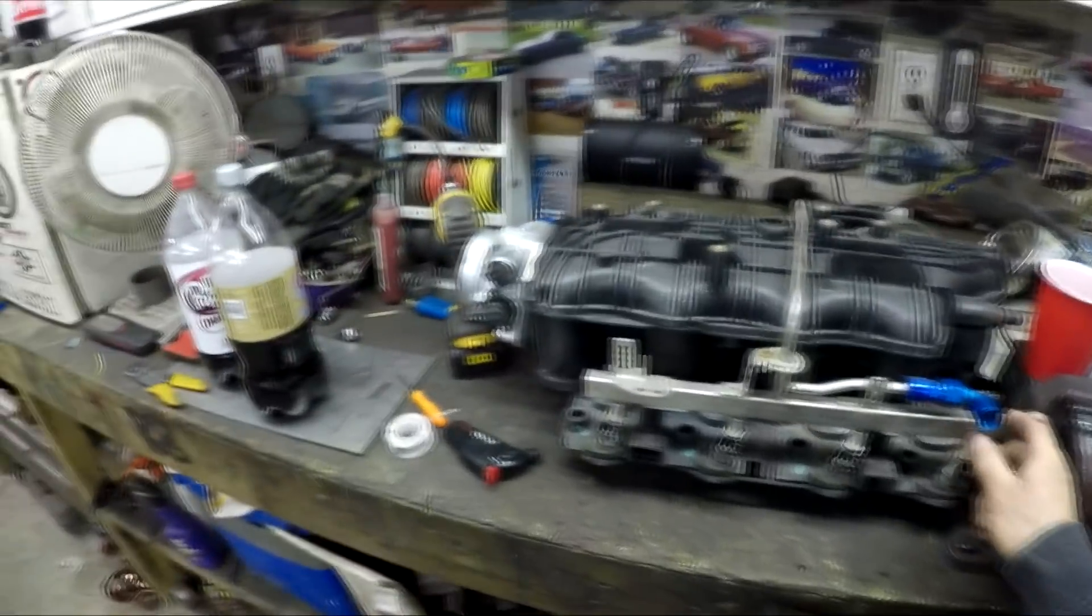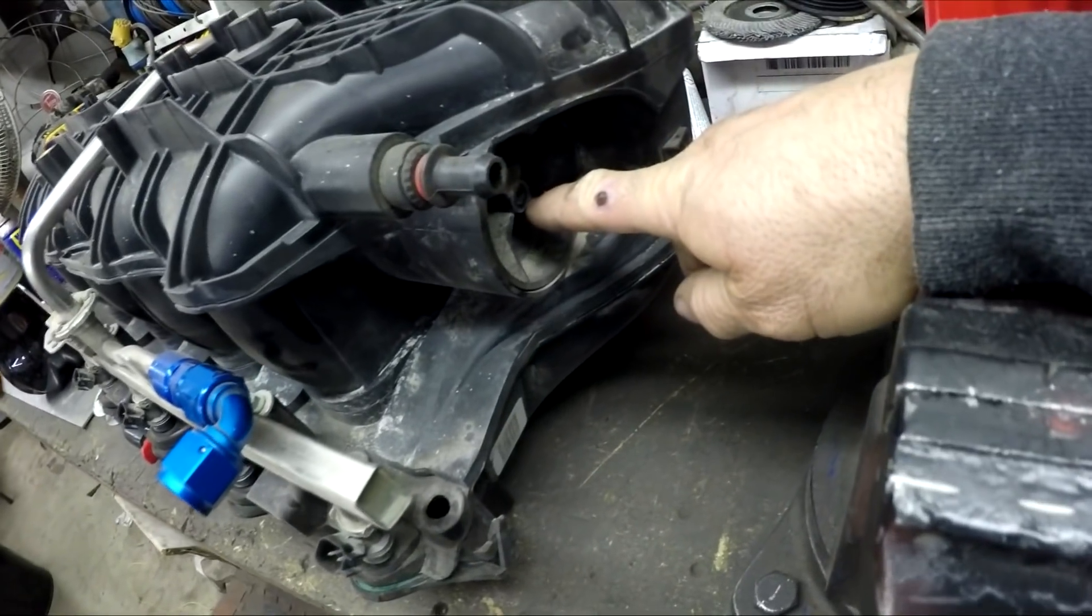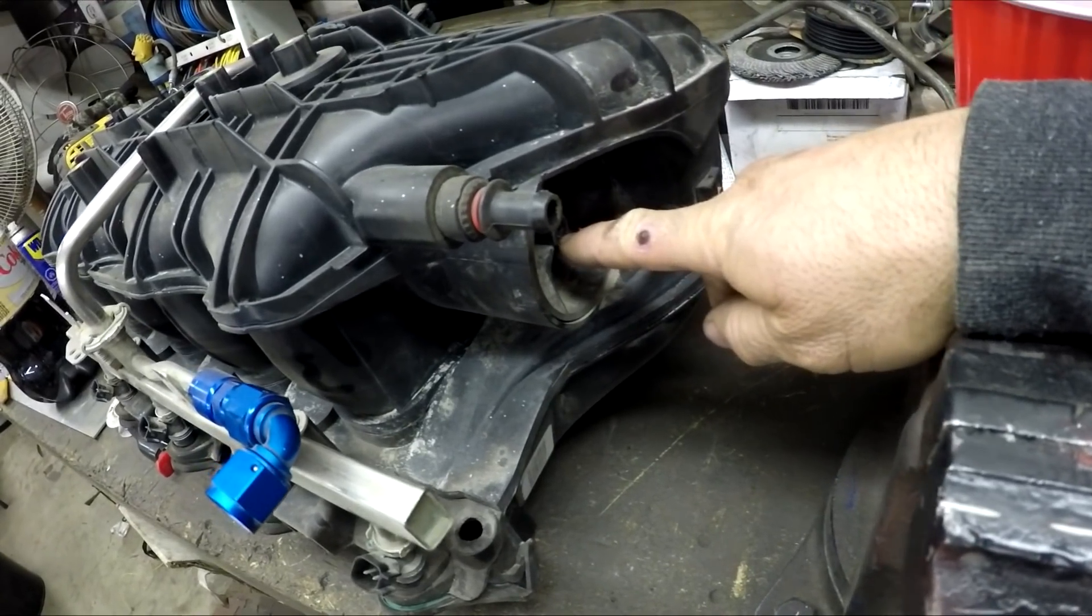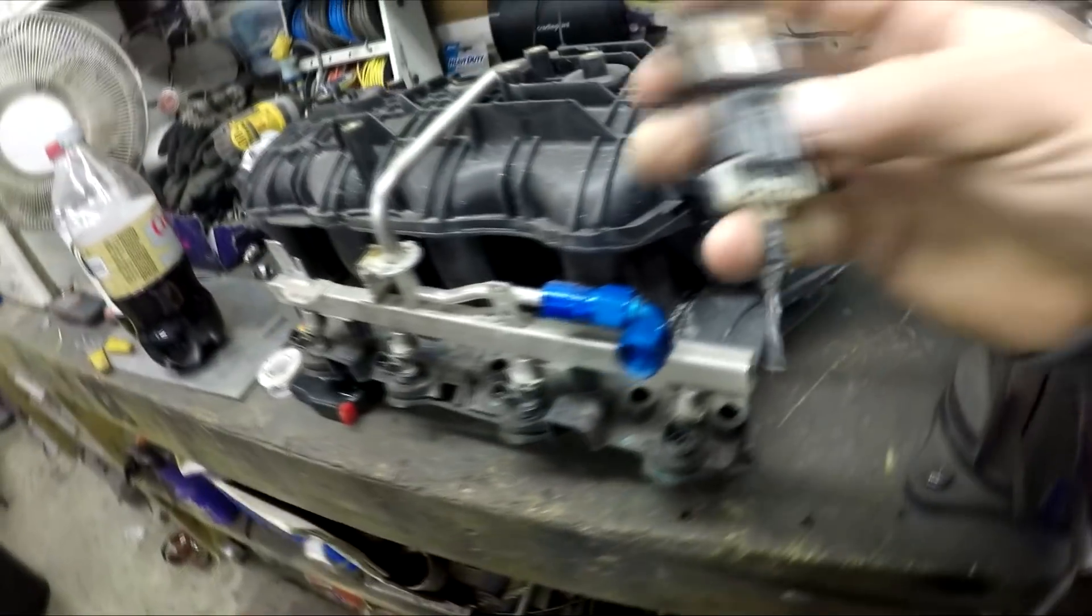And it has this kind of barb fitting on it. So what I think I'm gonna do is take my intake which is here, I'm going to drill and tap this hole right here and put a barb fitting on it, and then I'm gonna run a vacuum line from there. I'm gonna mount this inside the truck somewhere kind of like where the fuse box is.